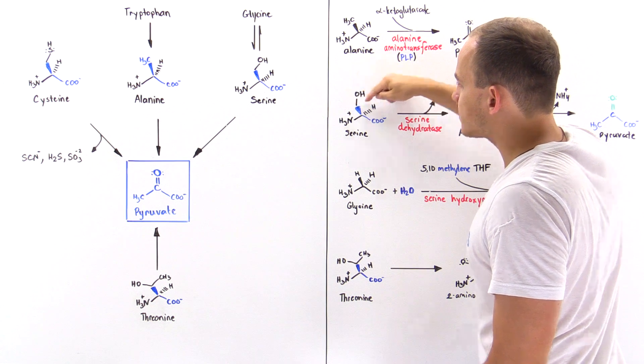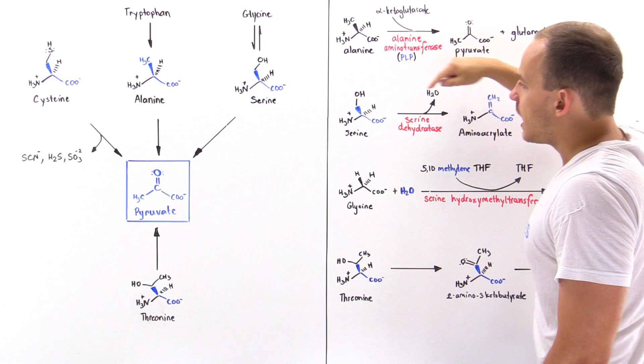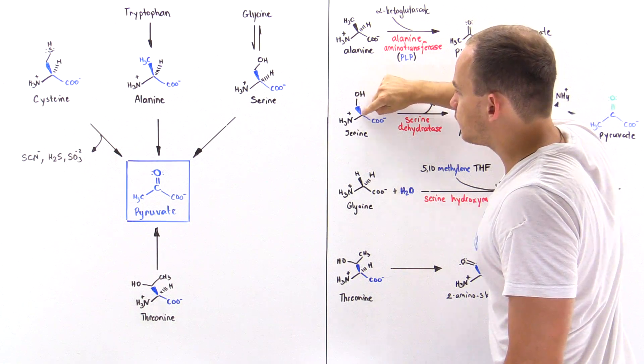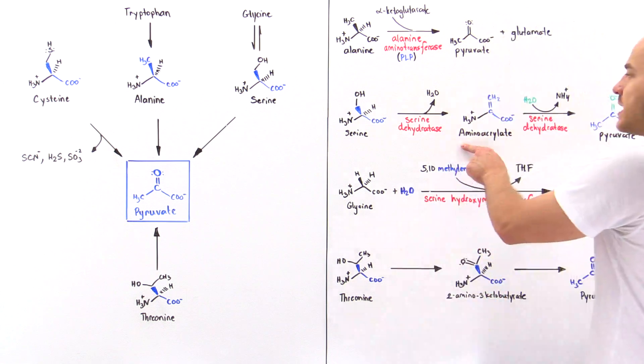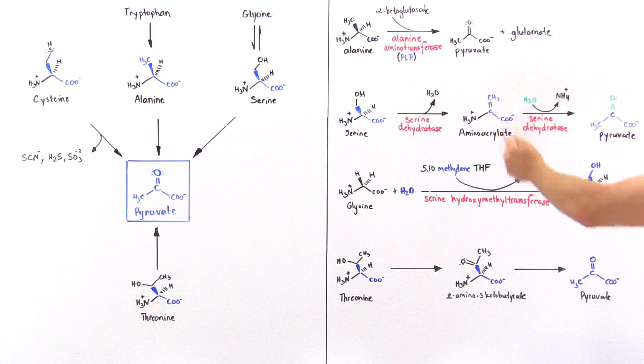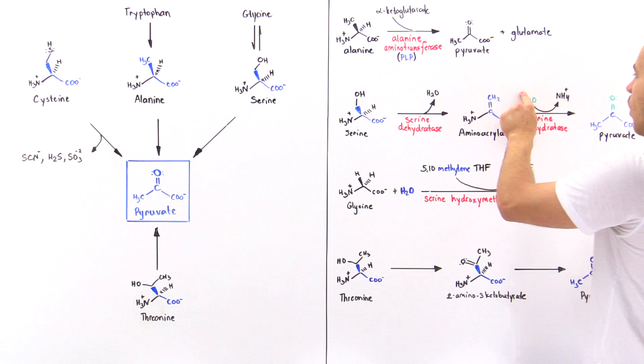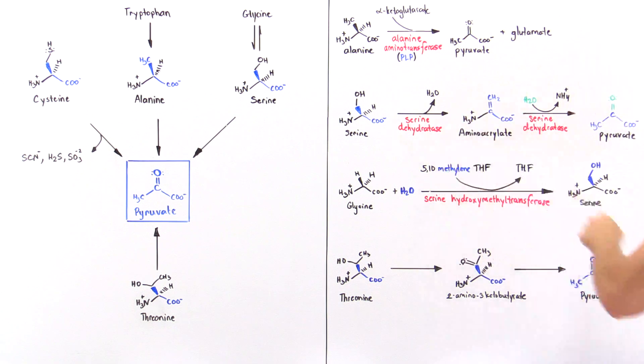We form this high-energy intermediate molecule aminoacrylate. Then the aminoacrylate undergoes a hydrolysis step, or said another way, a deamination step, in which we have the water molecule kicking off this ammonium group. We form this pyruvate as a result. So again, the enzyme that catalyzed this step is serine dehydratase.